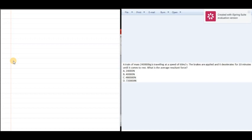This question is on the motion of a body which is decelerating. The question says a train of mass 240 kilograms is traveling at a speed of 60 meters per second. The brakes are applied and it decelerates for 10 minutes.